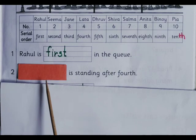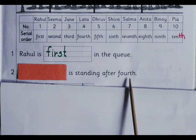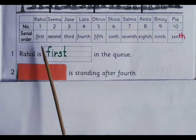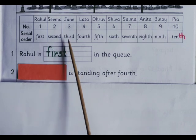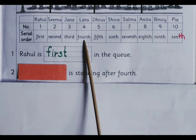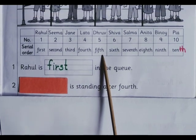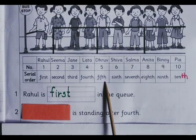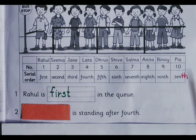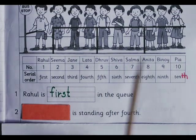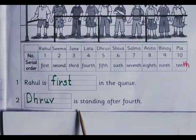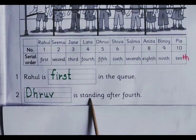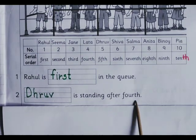Dash is standing after 4th. Counting: 1st, 2nd, 3rd, 4th — after 4th means 5th. Who is standing here? Dhru. Dhru is standing after 4th.